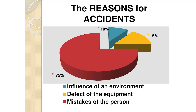On the example of car accidents, 75% are due to breaking traffic rules, 15% are due to car malfunctions, and 10% are due to ice on the road, fog, or rain. If you know what dangers exist and think about how to avoid them, we can prevent 75% of all accidents.